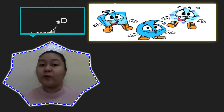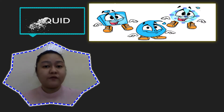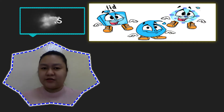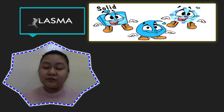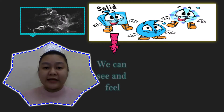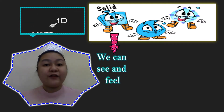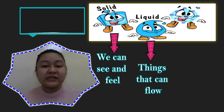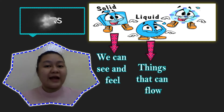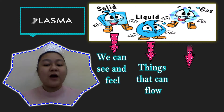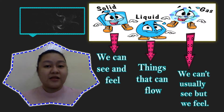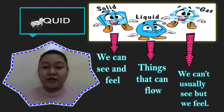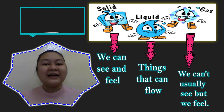Before we go with our new lesson, let's first have a short review about our previous topic. First is solid — things that we can see and feel. Next, we have liquid, which is things that flow. And the last one, we have gas — we cannot usually see them but we feel them. So we have the three states of matter: solid, liquid, and gas.